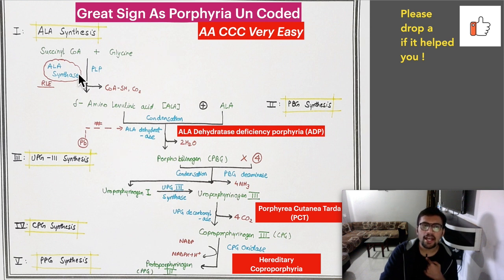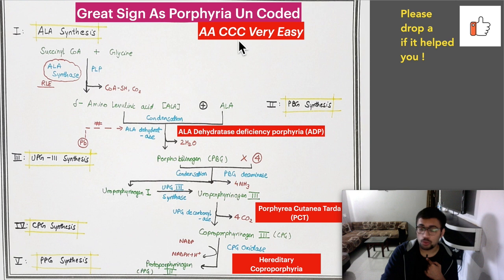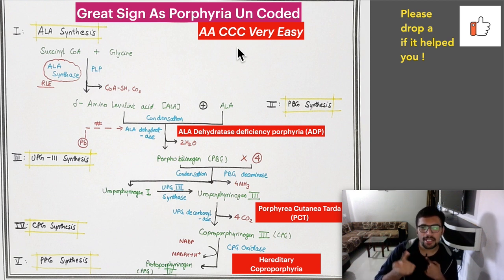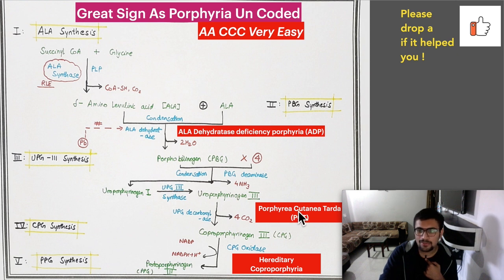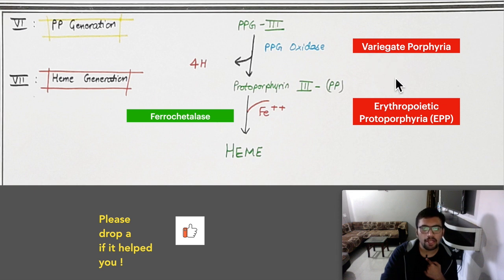I have already told you how to remember the pathway using the mnemonic 'great sinus porphyria uncoded.' Now I have created a mnemonic for the disorders: 'double A, triple C' — and then V and ER. So: double A, triple C, V, ER. The names are: first A is ALA dehydratase porphyria, second A is acute intermittent porphyria, first C is congenital erythropoietic porphyria, second C is porphyria cutanea tarda, third C is hereditary coproporphyria, then V is variegate porphyria, and ER is erythropoietic protoporphyria.